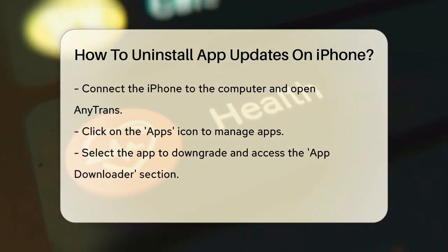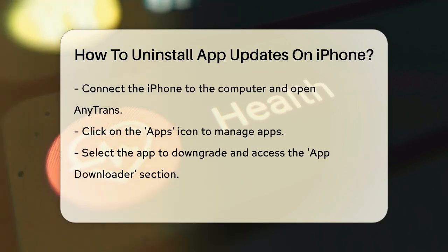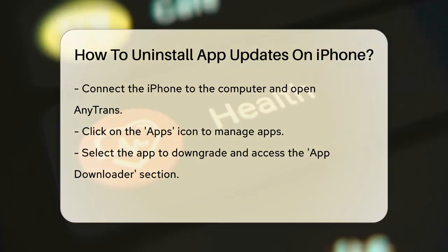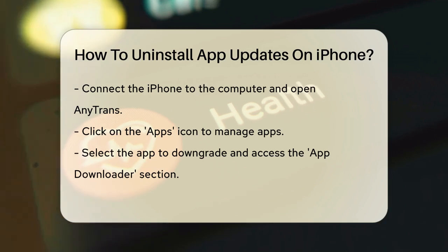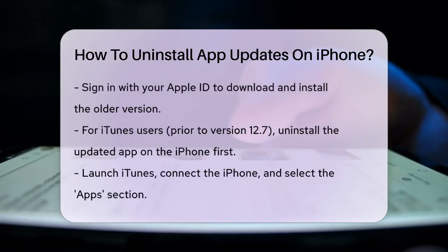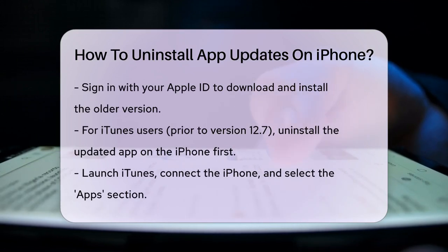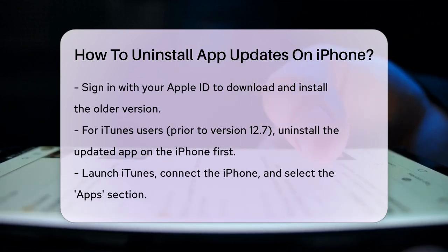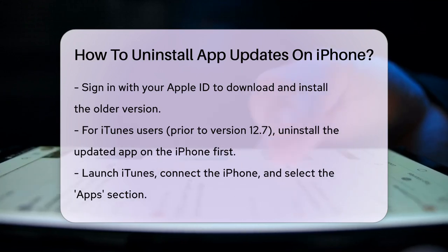Another method you can use is through iTunes, but this only works if you haven't updated to iTunes 12.7 or later. Here's what you need to do. Uninstall the updated app on your iPhone. Launch iTunes on your computer and connect your iPhone via a USB cable. Tap on the device icon in the upper left corner, then choose Apps on the left. Find the app version you want to install and press the Install button. Sync your iPhone with iTunes to get the old version back.